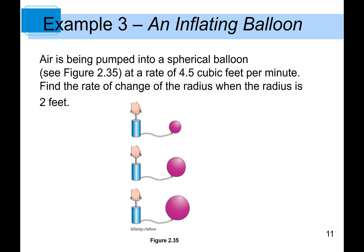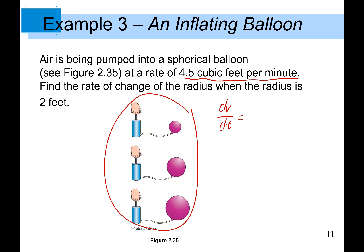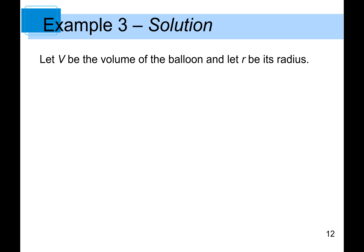Let's look at an example: an inflating balloon. Air is being pumped into a spherical balloon at a rate of 4.5 cubic feet per minute. The unit 'cubic feet per minute' tells us this is the change of volume over change of time, so dV/dt = 4.5 cubic feet per minute. We need to find the rate of change of the radius when the radius is 2 feet, so r = 2 feet.